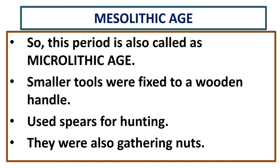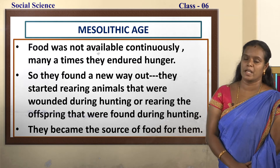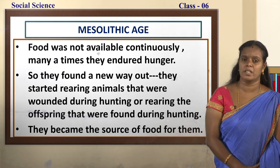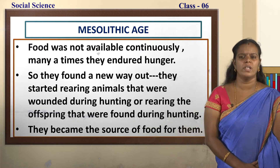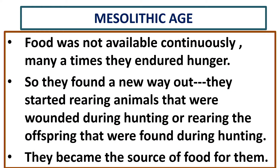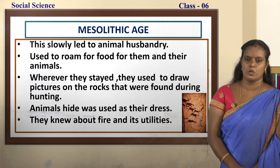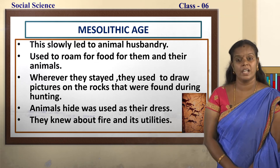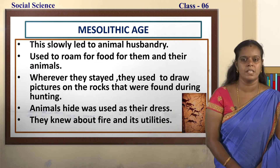They were also gathering nuts. Food was not available continuously, and many times they endured hunger. So they found a new way — they started rearing animals that were wounded during hunting, or rearing the offspring found during hunting. Offspring is nothing but the babies or young ones of animals. They would bring the wounded animals or their young ones and started rearing them. This became their source of food and slowly led to animal husbandry — rearing and caring of animals.